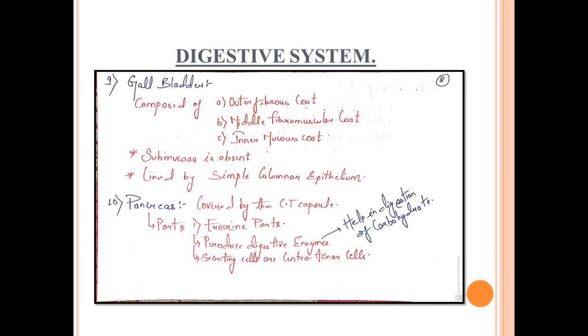Moving to the next organ, the gland pancreas. Pancreas is lined with connective tissue sheet covering. There are two parts: endocrine part and exocrine part. Exocrine part means there are ducts. It produces digestive enzymes. Digestive enzymes help digest carbohydrates. The secreting cells are centroacinar cells. Centroacinar cells are basically its functional cells.